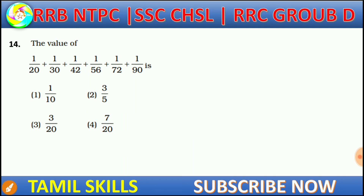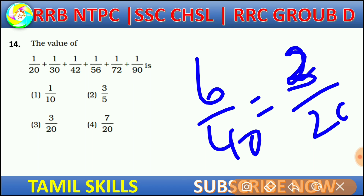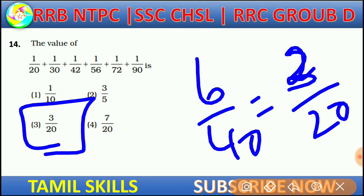All right, now we do this: one by ten here. So if you look at 10 minus 4, that gives 6 by 60. So the answer simplifies to 3 by 60, which is the final answer. So the sum — that's the answer, guys.